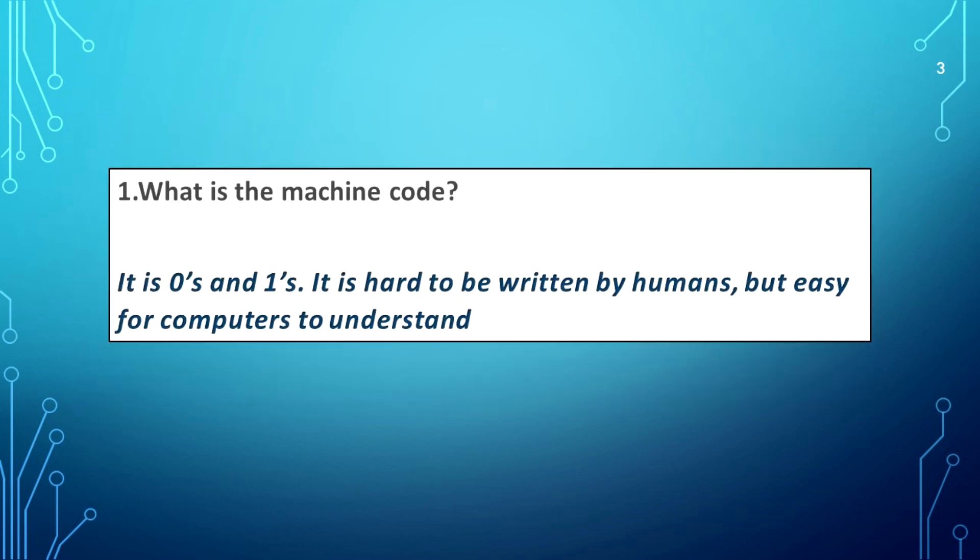What is machine code? It is zeros and ones. It is hard to be written by humans but easy for computers to understand.